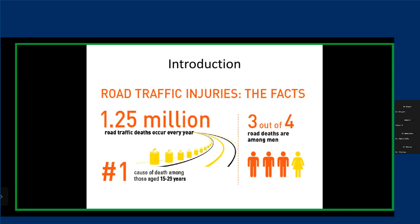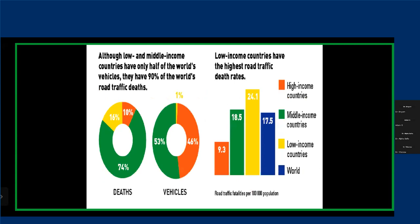Road traffic injury is actually the number one cause of death among those aged between 15 and 29 years of age, and about 50 million people are injured every year. Low and middle income countries are disproportionately affected — road traffic fatalities per 100,000 people for low income countries is the highest, at 24.1.